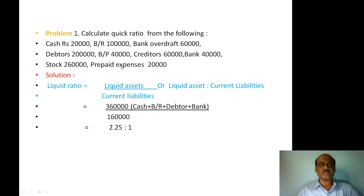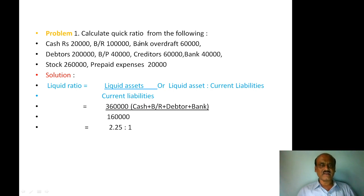To calculate the quick ratio, first identify the liquid assets and current liabilities. Current liabilities: Bank Overdraft Rs. 60,000 + Bills Payable Rs. 40,000 + Creditors Rs. 60,000 = Rs. 1,60,000. Liquid assets include cash, bills receivable, debtors, and bank balance — excluding stock and prepaid expenses.